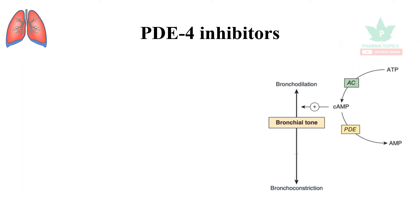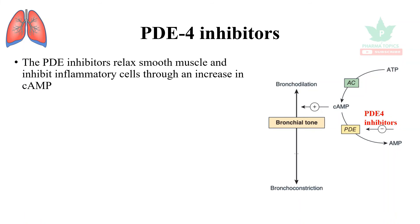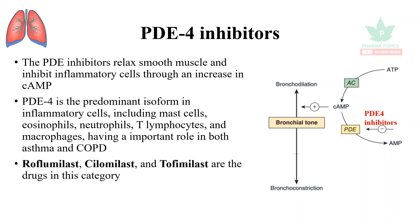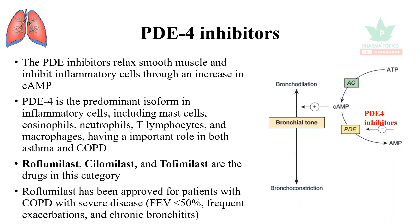PDE-4 inhibitors are a newer class. They increase cyclic AMP, relax airway muscles, and reduce inflammatory reactions since PDE-4 is the predominant isoform in the respiratory tract. Drugs include roflumilast, cilomilast, and tofimilast. Roflumilast is approved for COPD, improving forced expiratory volume and benefiting chronic bronchitis.